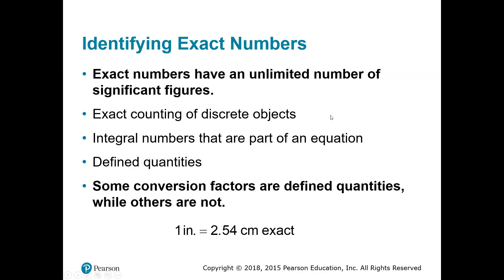We ended our discussion last class talking about exact numbers — the ones that have an infinite or unlimited number of significant figures. We talked about things involved in counting. If I want to count the number of keys on a keyboard or the number of donuts in a box, those would be exact numbers. There wouldn't be any ambiguity about their measurement or precision.